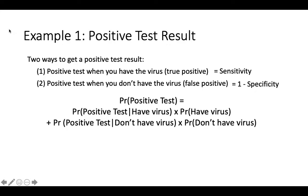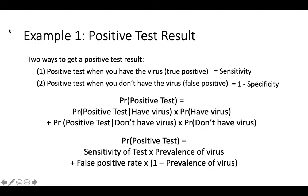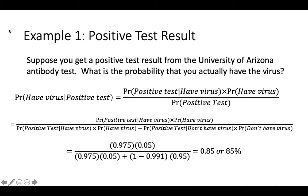Therefore, the overall probability of having a positive test result is the probability of getting a positive test result when you have the virus, multiplied by the probability of having the virus, plus the probability of getting a positive test result when you don't have the virus, multiplied by the probability that you don't have the virus. This equals the sensitivity of the test multiplied by the prevalence of the virus, plus the false positive rate multiplied by 1 minus the prevalence of the virus. If we plug the appropriate numbers into this equation, we find that the probability that you actually have the virus with a positive test result from the University of Arizona's antibody test is 85%.